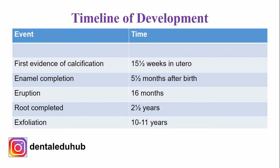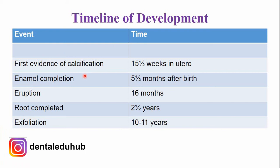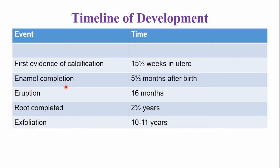The timeline of development of this tooth: the mandibular deciduous first molar — the first evidence of calcification begins around the age of 15 and a half weeks in utero. The crown is completed by the age of 5 and a half months after birth. The tooth emerges into the oral cavity around the age of 16 months, and the root is completed when the baby is 2 and a half years old.